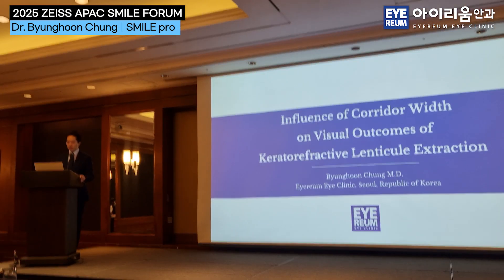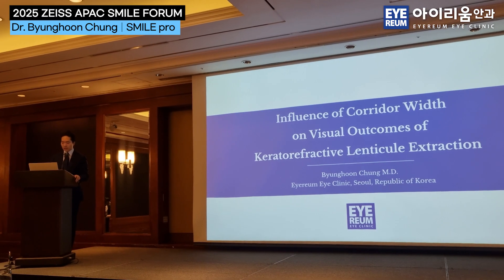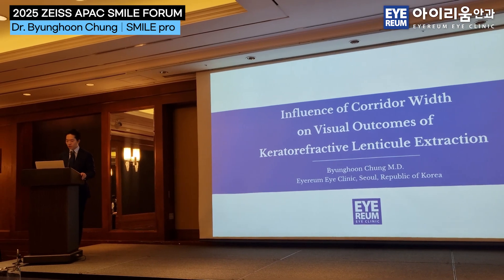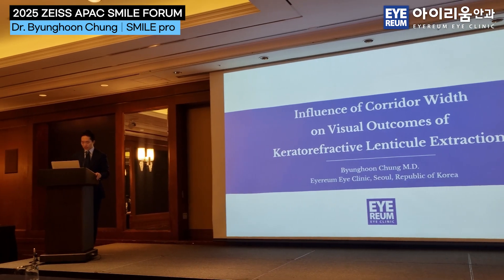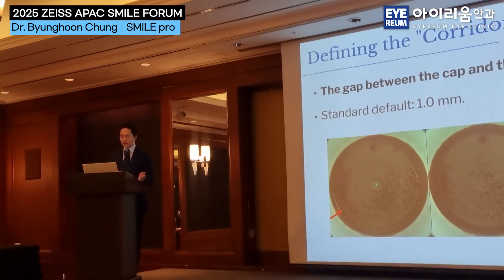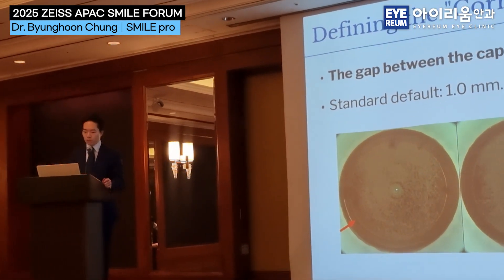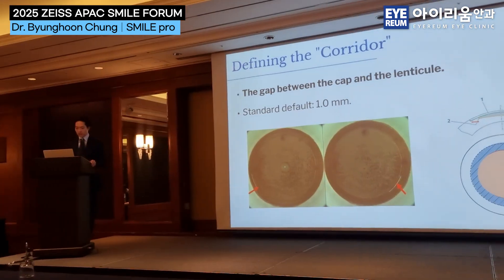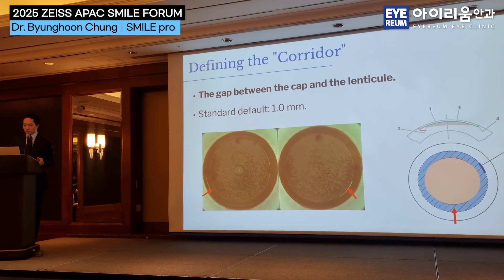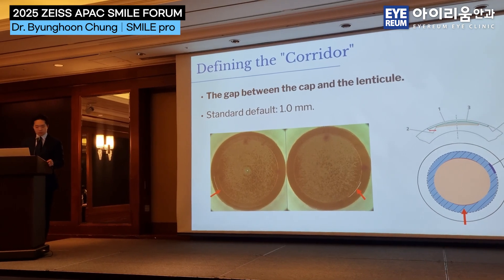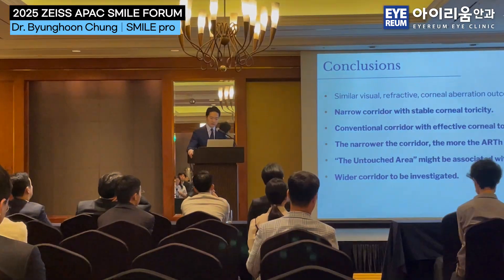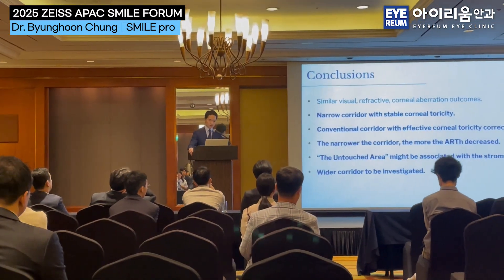Welcome to the set. Let's first define what we mean by corridor. On the picture set, you can see two corneas have the same size but different corridors. The key finding was: the narrower the corridor, the more the ARTH decreased.